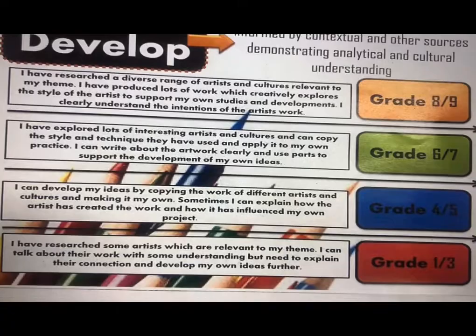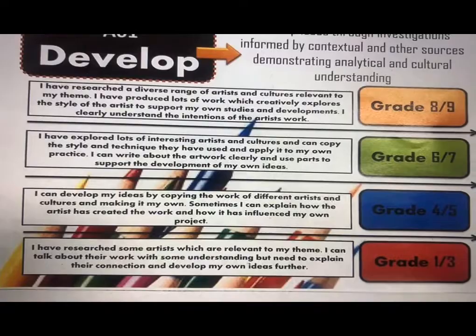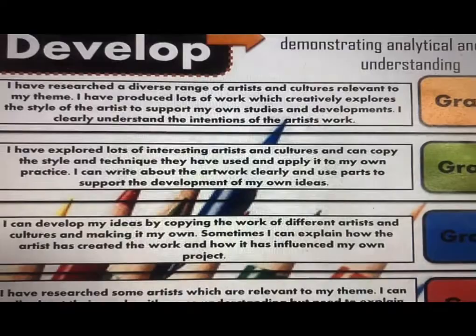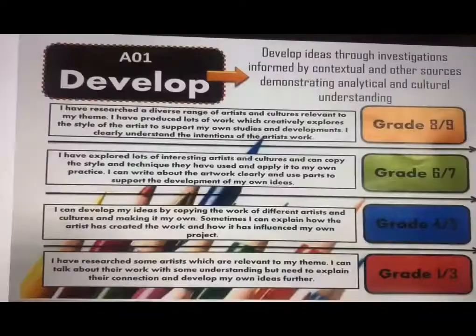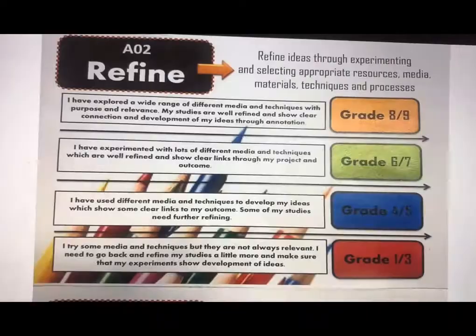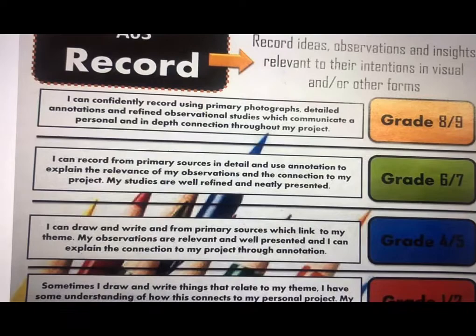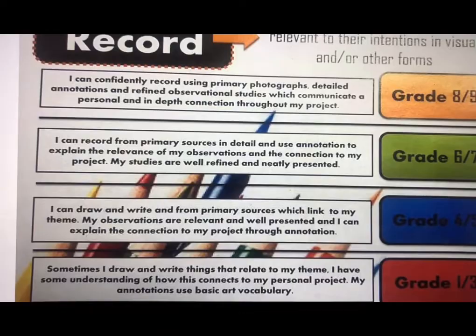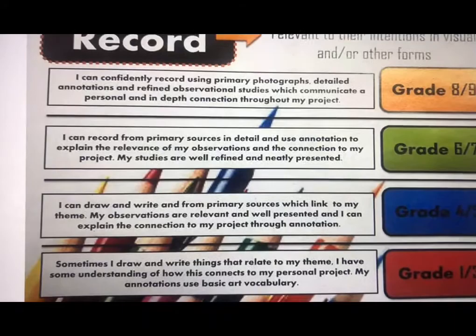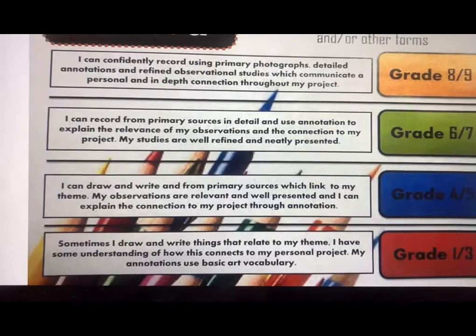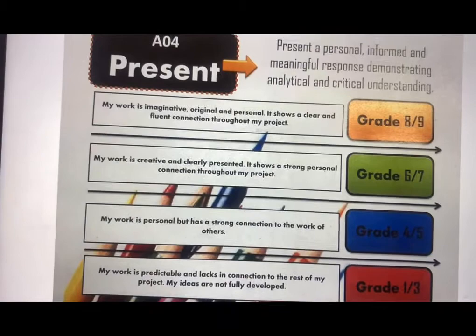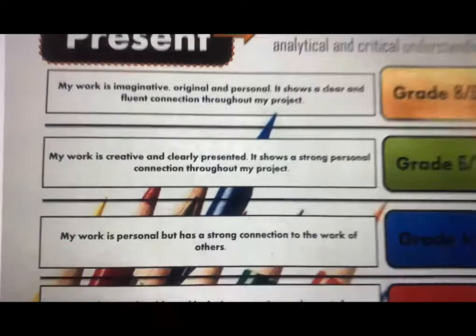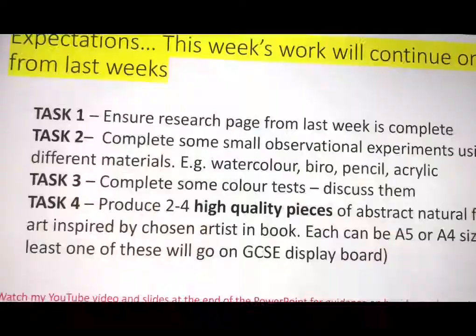I'm not going to go through the lower grades for now because I think most of you are able to work at this grade six level. And then you will start to refine, which we'll go into next week. You've already done the record section by recording your initial ideas. For record, it does say to confidently record using primary photographs and detailed annotations. A lot of you have done these observational drawings already, but I want you to see if you can take some photographs as well, because that really helps boost the clarity in your work. Present is talking about your work as a whole — imaginative, original, and personal ideas that are clearly presented. That is what you should be working at: showing your own ideas, not just copying the artist's drawing. Maybe you copy a section of it and then develop it.